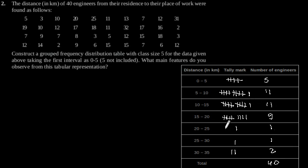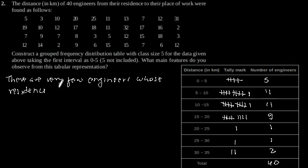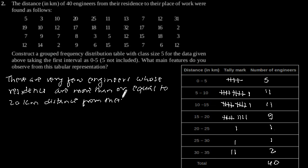Now, from this grouped frequency distribution table, we can observe that there are very few engineers whose residence is more than or equal to 20 kilometers distance from their workplace.